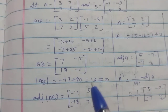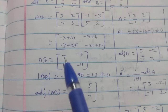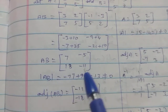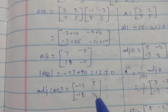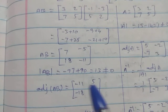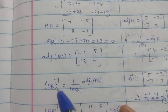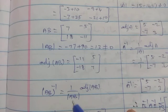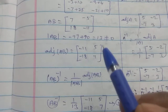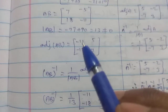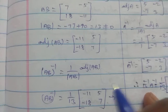So inverse can be found out. Adjoint of AB: for a 2×2 matrix, leading diagonal interchange gives minus 11, and another diagonal sign change gives minus 18, plus 7. So adjoint of AB equals [-11, 5; -18, 7]. That is equation number 1.